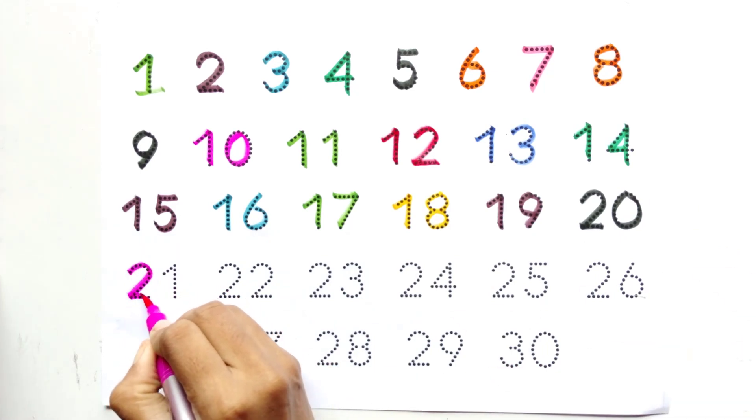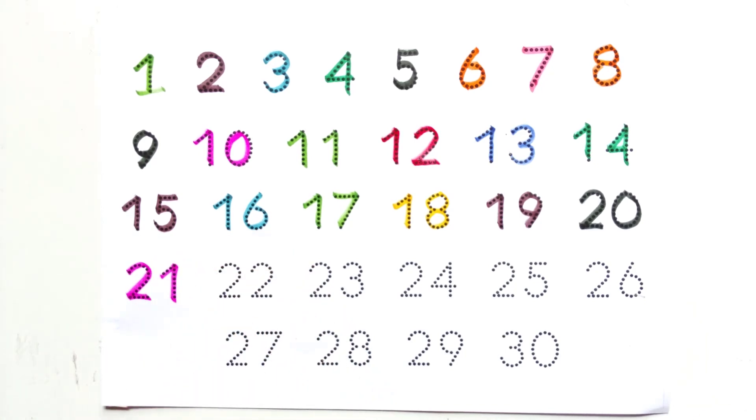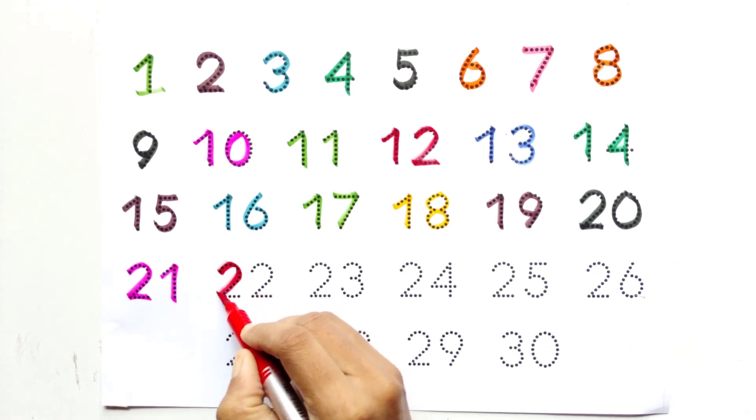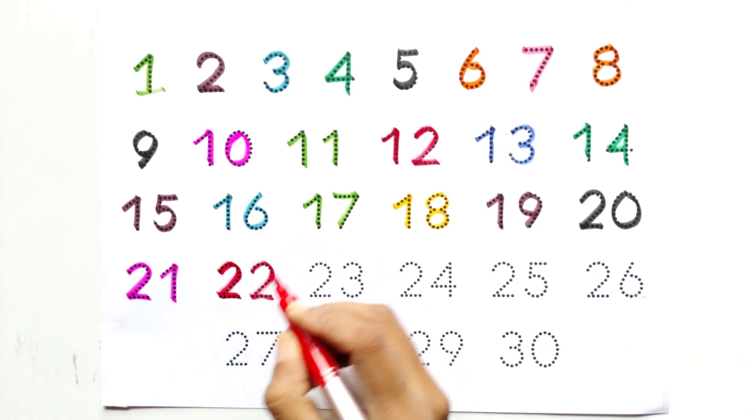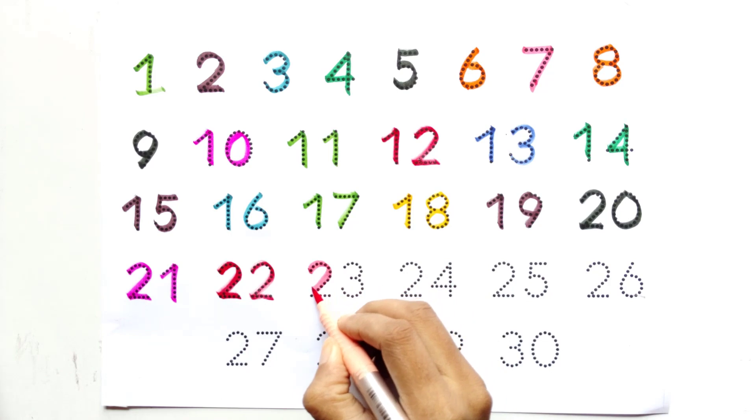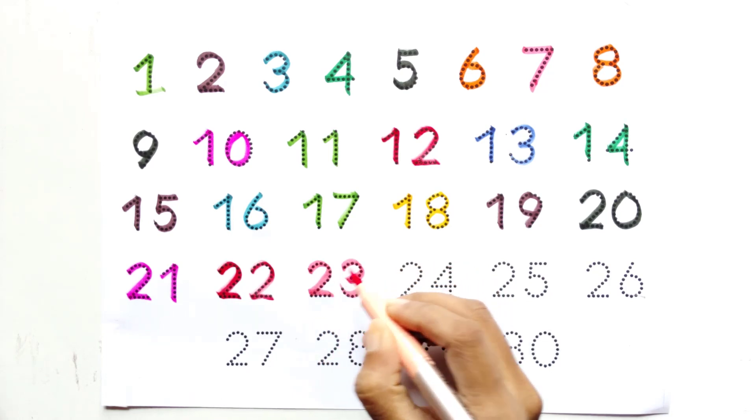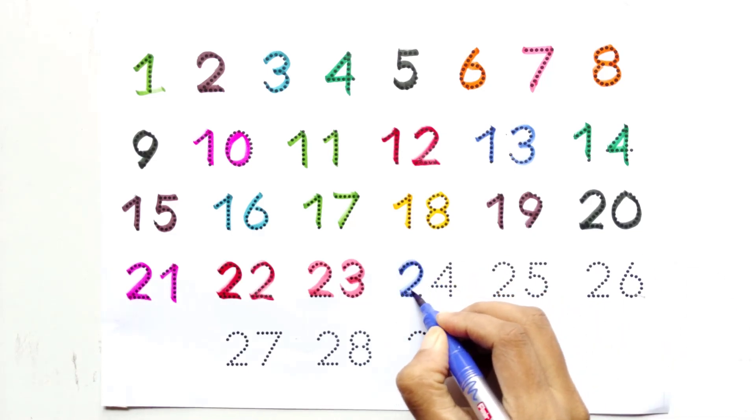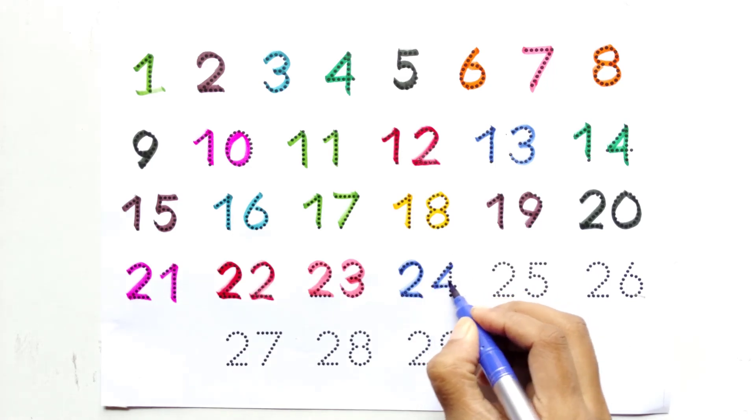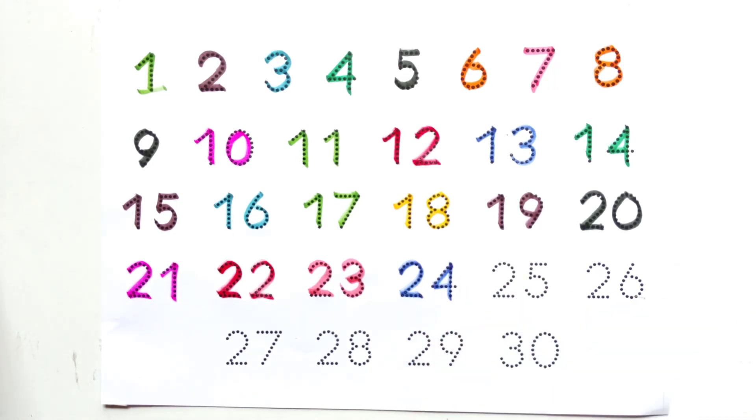Two and one, twenty-one. Two and two, twenty-two. Two and three, twenty-three. Two and four, twenty-four. Two and five, twenty-five.